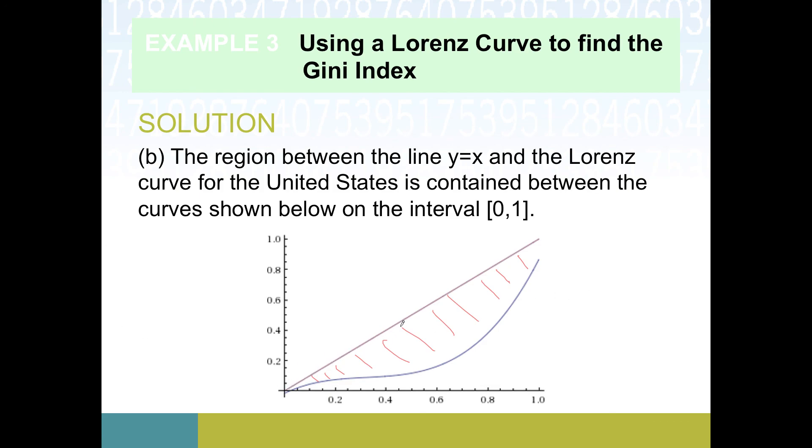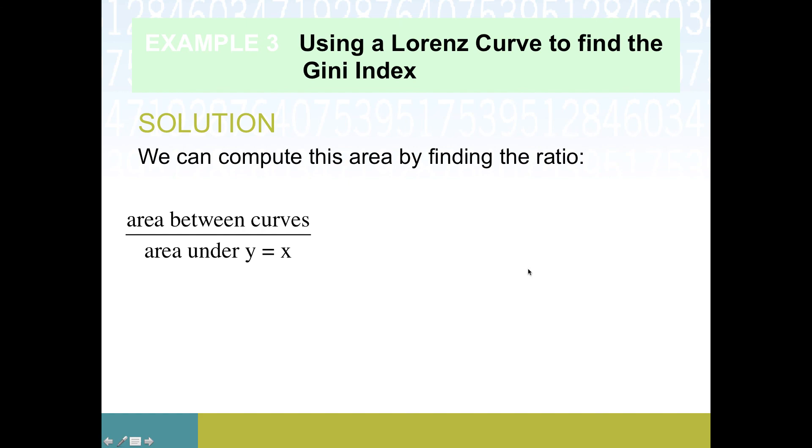So we'll go from 0 to 1. And then we're looking at the top line being y equals x. That's our perfect equality line. And then here's the actual Lorenz curve for the United States model that we're using. So remember that the definition they gave us for the Gini index, the most important piece is the area between the two curves, but it also gets divided by the area under y equals x. But that's actually going to end up being not too bad. So here's what our numerator looks like. Here's the perfect equality. And here is our actual Lorenz curve for the United States model that we're using.